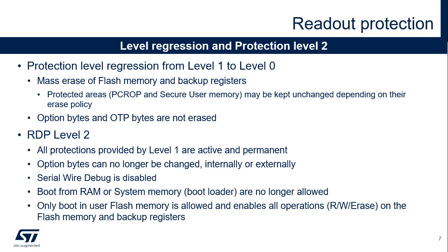Readout protection level 2 provides the same protection as in level 1, but the protection becomes permanent. Option bytes cannot be modified, so once the RDP protection is set to this level, there's no way to modify it, and level regression with mass erase mechanism is no longer possible. This level must only be considered in the final product when the development stage is completed. Note that to ensure that there are no backdoors, this protection cannot be bypassed even at ST Factory.